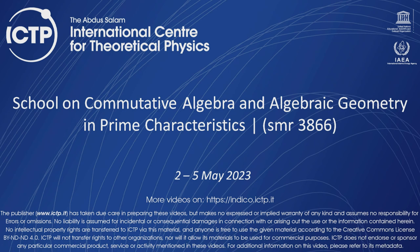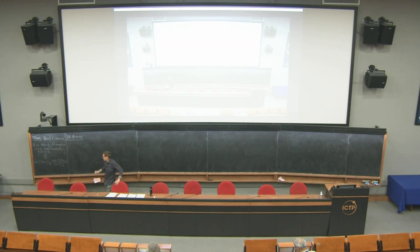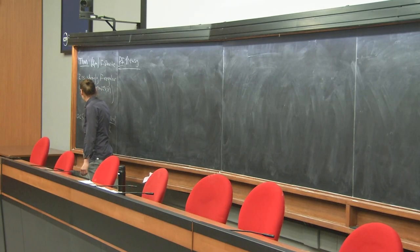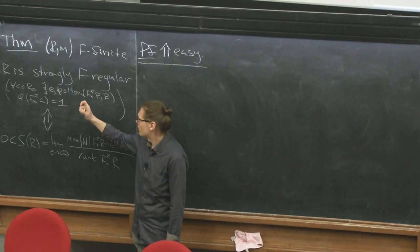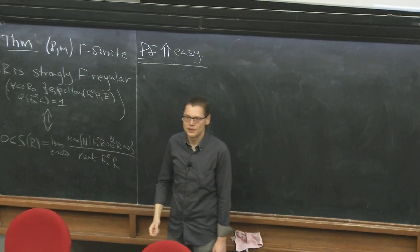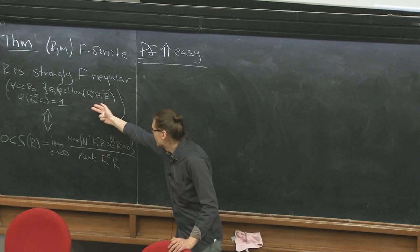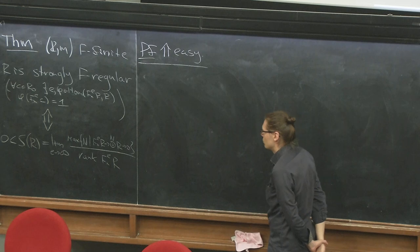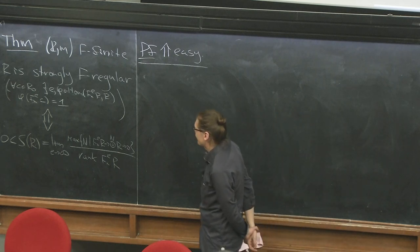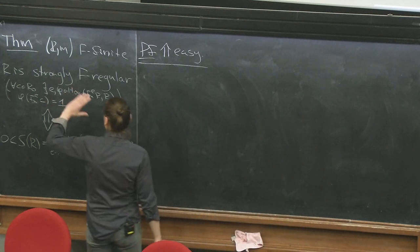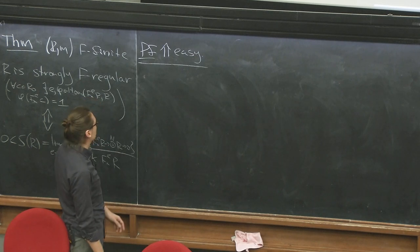Last time we proved the theorem that F-signature determines whether the ring is strongly F-regular or not. F-signature is positive if and only if R is strongly F-regular. We showed the direction from positivity to regularity is easy: by contradiction, if it's not F-regular, we showed just by negating the definition that F-signature is going to be zero. The more difficult direction is to show positivity starting from strong F-regularity.